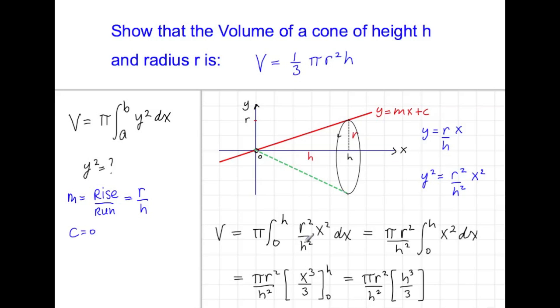And here we see there's a cancellation. We have dividing by h squared and multiplying by h cubed, which just becomes h. And there's our answer. We see what we're left with is one-third pi r squared h, which is the formula for the volume of the cone.